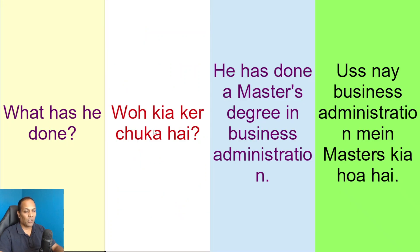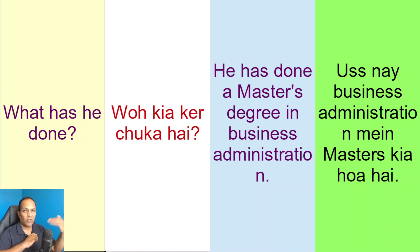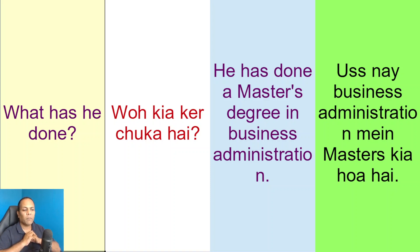Usne kia kiya hai — depending upon the situation, aap us sawal ka alag alag javaab de sakta hai: ki he has done a bachelor's degree, ya he has completed his bachelor's in computer sciences — ki usne apna bachelor's in computer sciences mein complete kia hai.